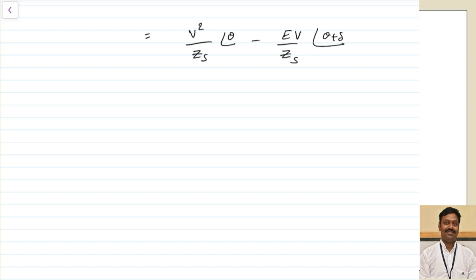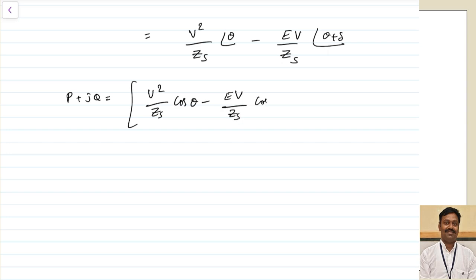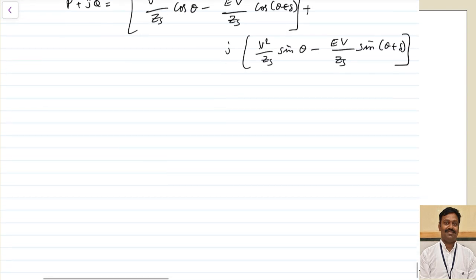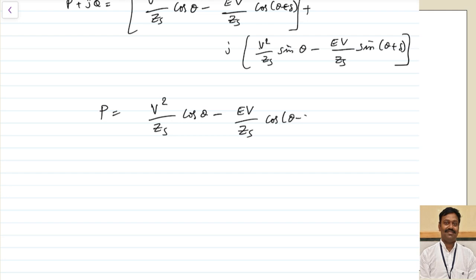Separating S into real and imaginary components: the real part is obtained by taking cosine values and the imaginary part by taking sine values. The active power P = (V²/Zs)·cos θ − (EV/Zs)·cos(θ + δ).